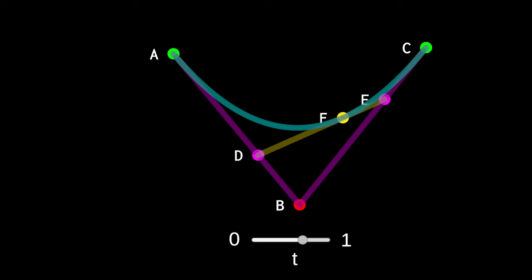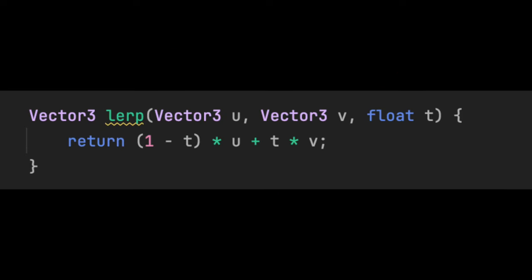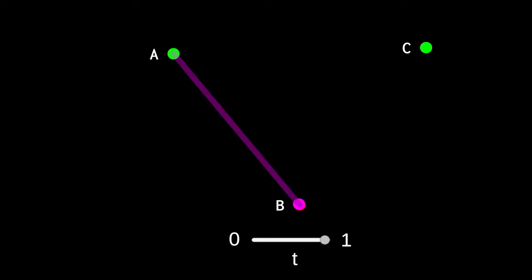Mathematically, we can move a point along a line between two points by creating a linear interpolation function, or LERP for short. The LERP function takes in the start point, the end point, and a parameter t. t defines how far along the line we want to move.